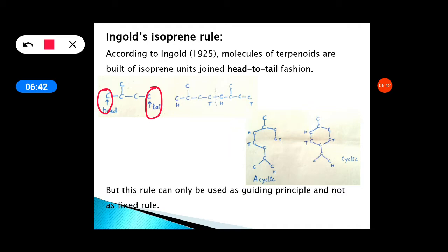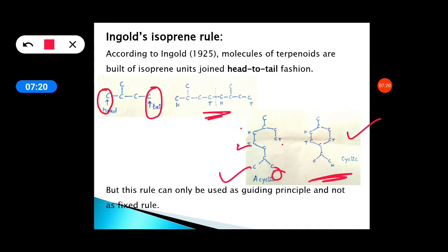According to Ingold, molecules of terpenoids are built up of isoprene units joined in a head-to-tail fashion. Two isoprene units can be joined head-to-tail in an open chain (acyclic) or closed chain (cyclic) manner. These isoprene units are joined head-to-tail — they may be acyclic or cyclic. However, this rule can only be used as a guiding principle and not as a fixed rule.